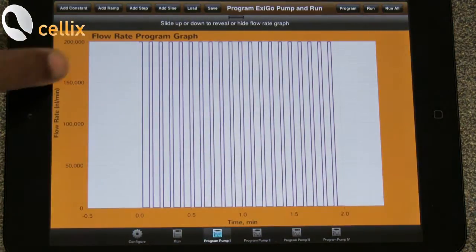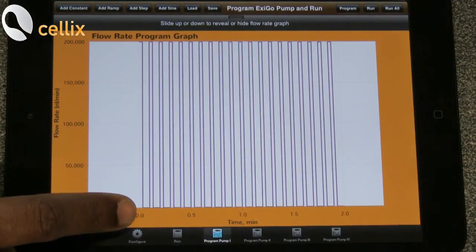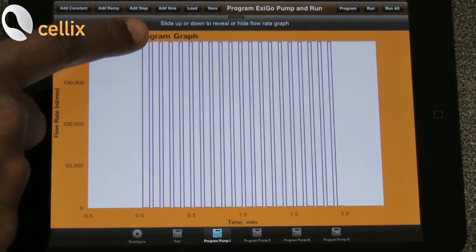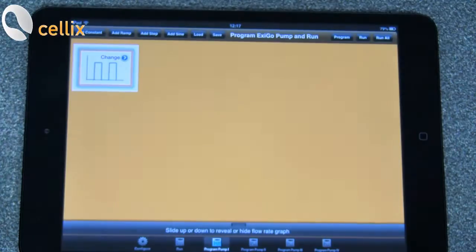So you can see the chart where the pump starts at 200,000 nanoliter per minute for 2 seconds, and it drops to 0 for 4 seconds and it goes back to 100,000. To save the program, you have the option there. So click save.